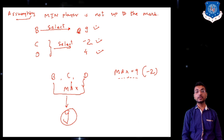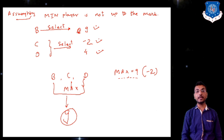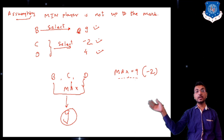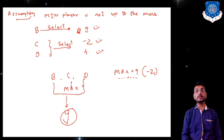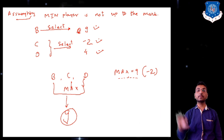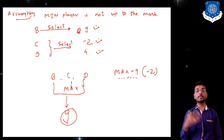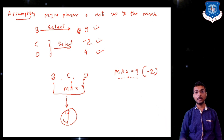That is why in the Minimax Search Procedure, if one player is not up to the mark, the other player wins by a large margin. However, when asked in an exam to find the winning path, we assume both players are perfect and playing well.